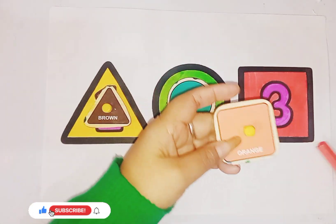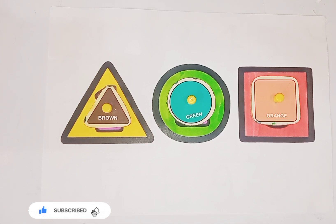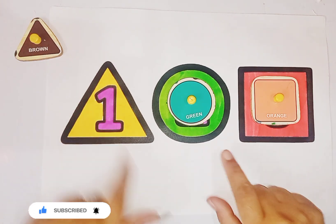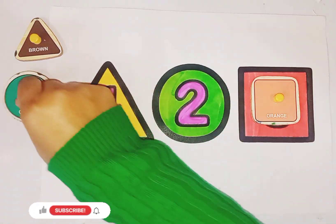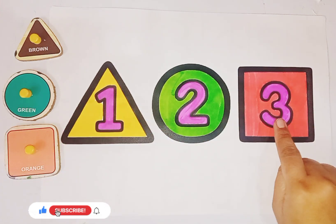Square is like this. So kids today we learn number and shapes: triangle 1, circle number 2, square number 3.